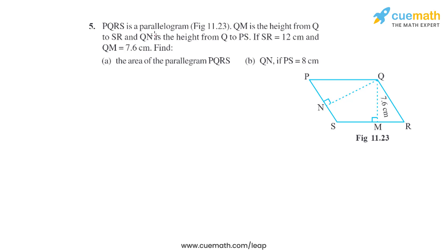Question 5 of this exercise says PQRS is a parallelogram and QM is the height from Q to SR and QN is the height from Q to PS. If SR is 12 cm and QM is 7.6 cm, we have to find two things: first, the area of parallelogram PQRS, and second, we have to find QN.